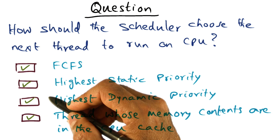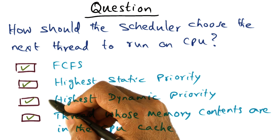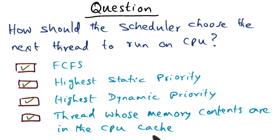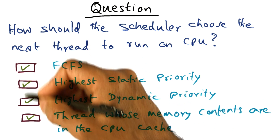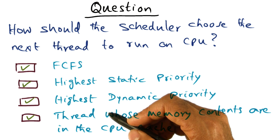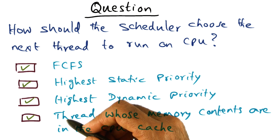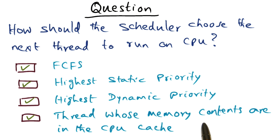All four of these choices one can argue for and against. But in this particular lecture, what we're going to focus on is picking the thread whose memory contents are likely to be in the CPU cache — why that makes a lot of sense, especially in a multiprocessor where there are going to be several levels of caches and coherence misses. We'll discuss more about that in the rest of this lecture. As I said, there are valid arguments both for and against every one of these choices, but this is the choice we're going to focus on.